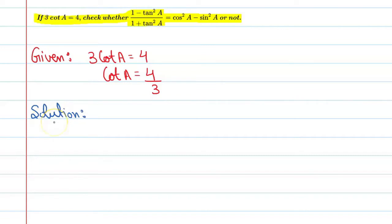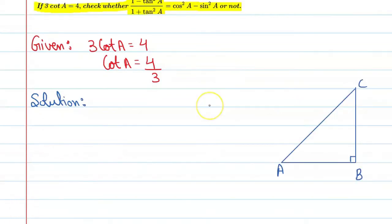So let's make its figure first. You can see this figure — this is a right angle triangle A, B, C with the right angle at B.